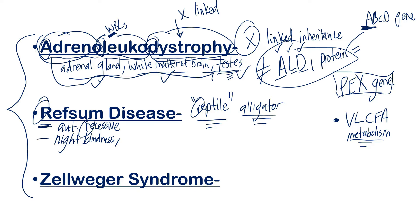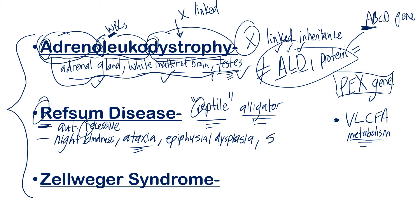Alligator legs are really short and stumpy looking, so imagine having ataxia or issues moving, because an alligator runs in a funny way. That also cues you into epiphyseal dysplasia. The epiphyseal plates are involved with growth, so you can have issues with the length or growth of your limbs and extremities. And reptiles have scaly skin, so a human with Refsum disease can present with scaly skin.